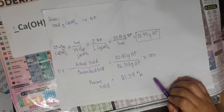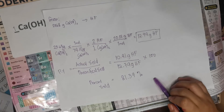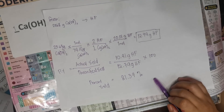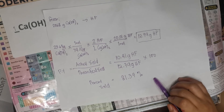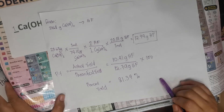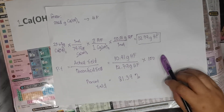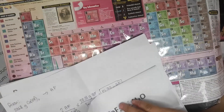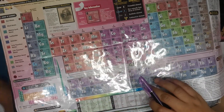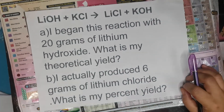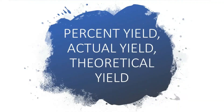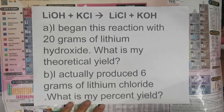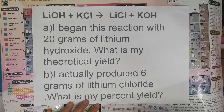So that is how theoretical yield, actual yield, and percent yield are computed. To clarify: the actual yield is always found in the given, because it is the actual amount collected from the experiment. When computing percent yield, the actual yield is always given, while the theoretical yield is what we compute from the given grams using stoichiometry. For your practice problem, I have here problems A and B — please compute and post your answers in the comment box. Thank you.